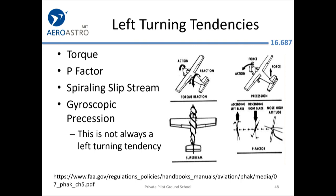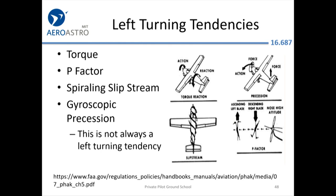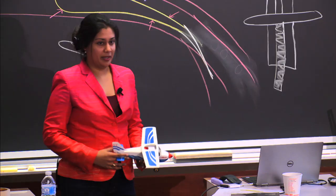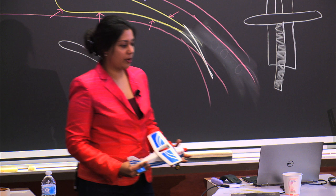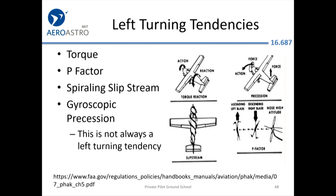There is a tendency for these airplanes to turn left, and there are multiple things that contribute to this left turning tendency. When you're in an airplane flying, you might hear your instructor say 'right rudder' — that's to counteract some of these left turning tendencies. This can be a very in-depth subject, so I'll refer you to the PHAK — the Pilot's Handbook of Aeronautical Knowledge — Chapter 5, which goes into all of these.